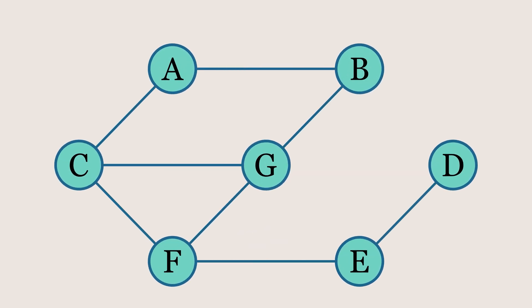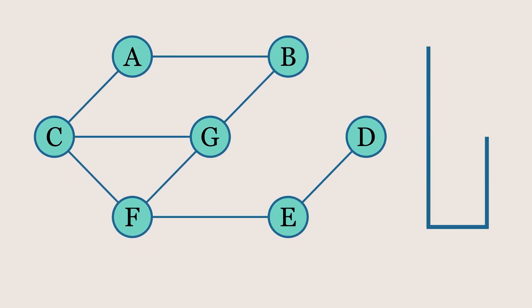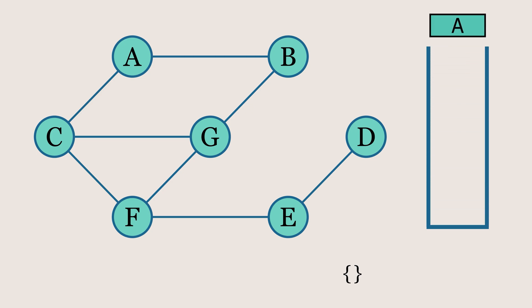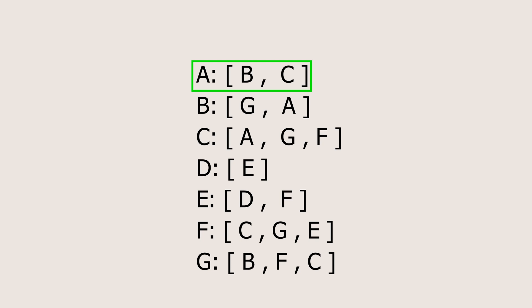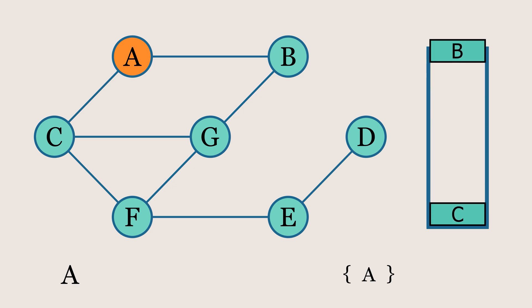Now let's explore the iterative version of the DFS algorithm. First, we initialize an empty set to keep track of nodes we've already explored, and an explicit stack to manage the traversal. Initially, this stack will contain just the starting node, A. Next, we'll pop the top element from the stack and check if it's already visited. If it hasn't been visited, we'll add it to the set, print it, and mark it in orange to visually track the traversal. This node has two neighbors — B and C in the adjacency list — but we'll push them onto the stack in reverse order, first C then B, because the stack follows a last-in-first-out order. By pushing node B last, it will be the first to be processed, maintaining the correct traversal sequence.